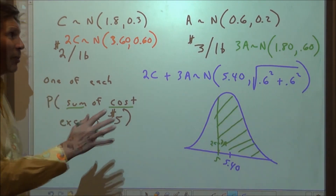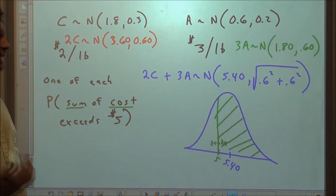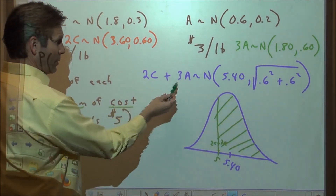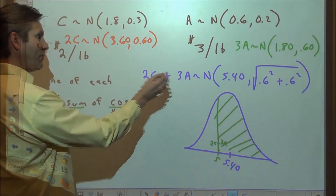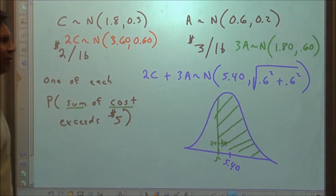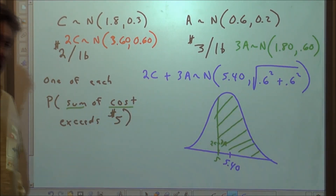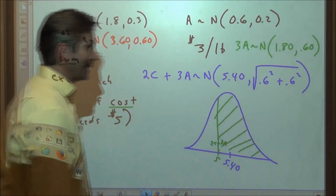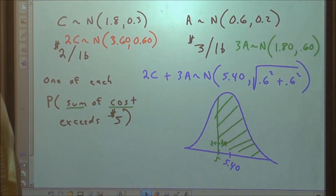This is about as tough a problem as we get — a joint distribution involving two linear transformations. If you can handle those, you can handle just about anything. Good luck.